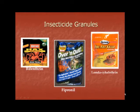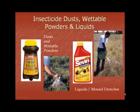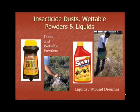Here are some examples of insecticide granules with the active ingredients bifenthrin, fipronil, and lambda-cyhalothrin. There are many different insecticide dusts, wettable powders, and liquids. These are dusted on individual mounds or drenched on individual mounds.